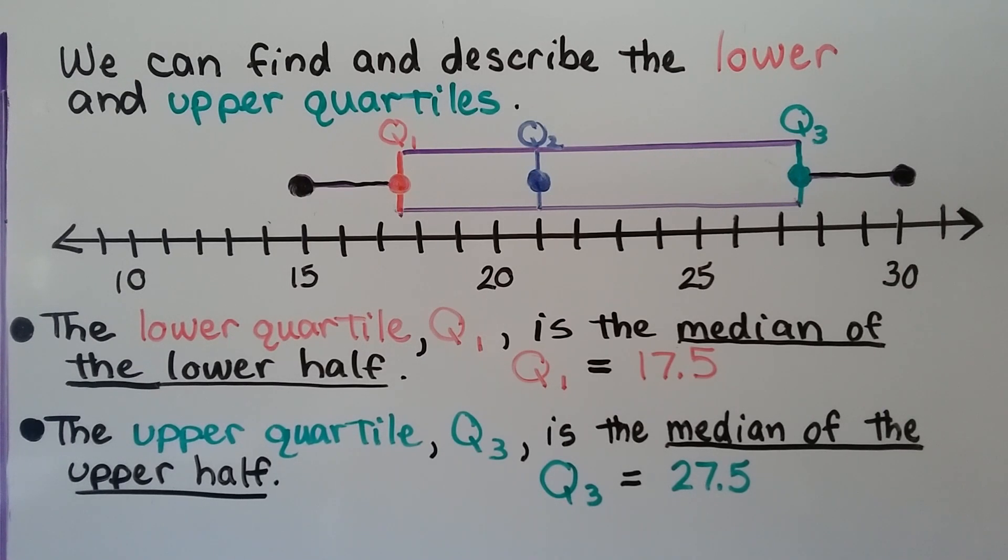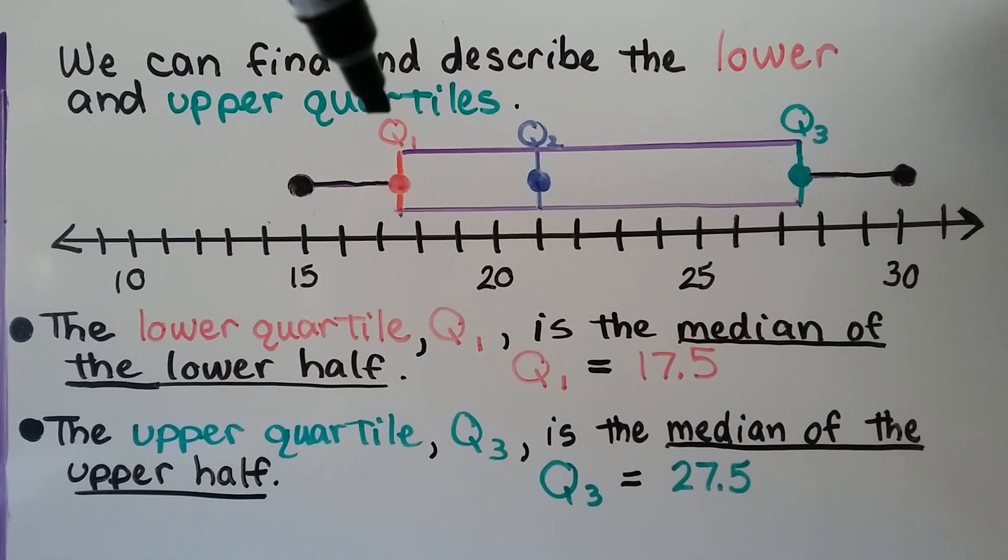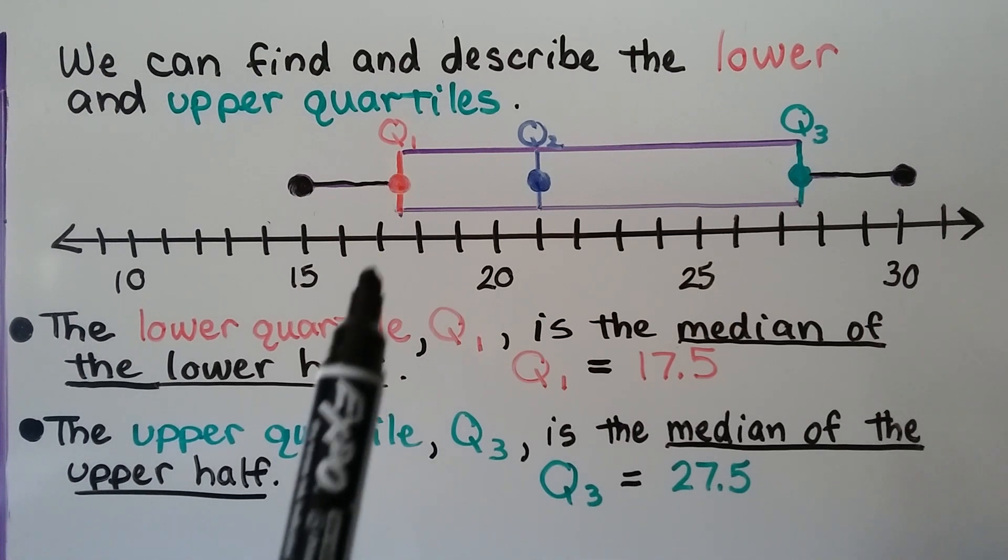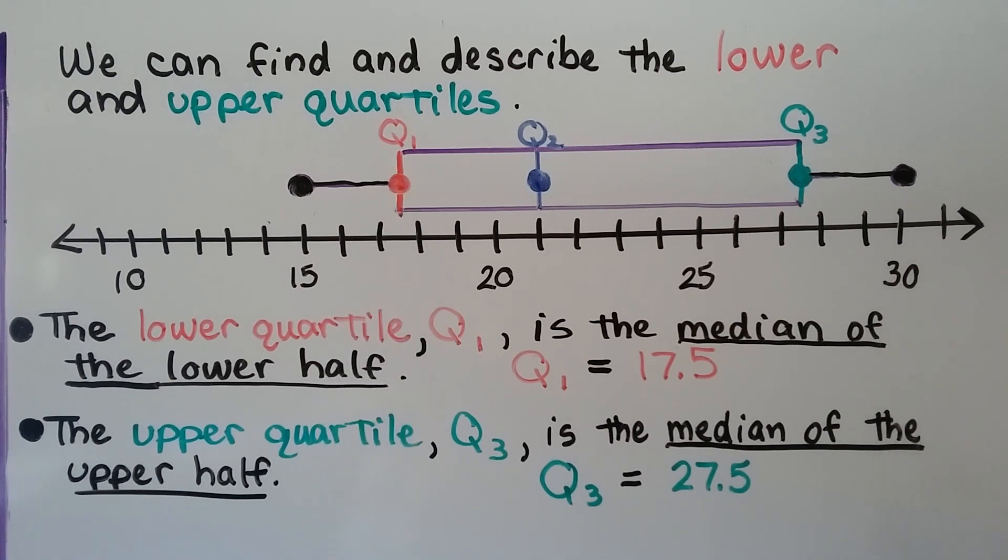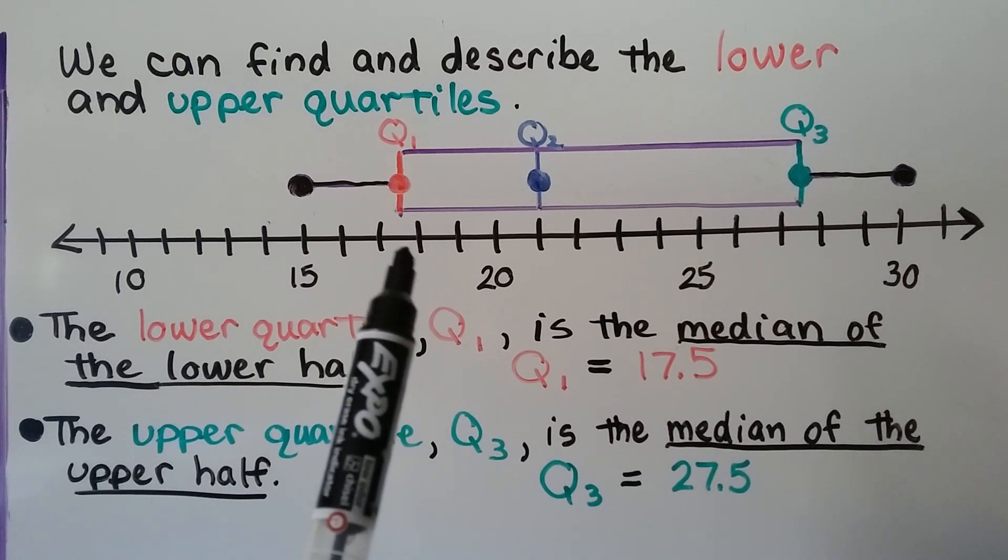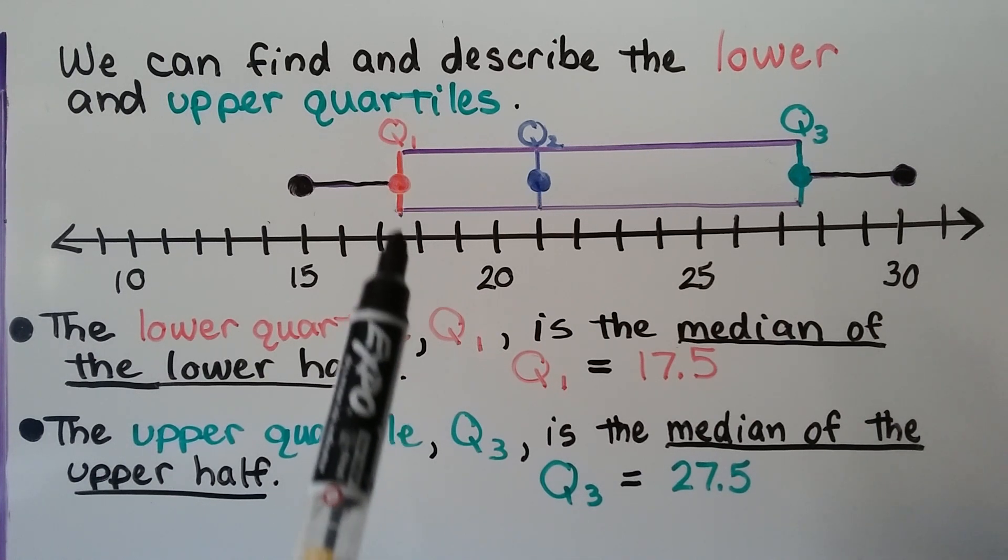We can find and describe the lower and upper quartiles. Here we have the same box plot. The lower quartile, that's this Q with a little sub 1, it's the median of the lower half. So this is the median of the lower half, and it's at 17.5 on the number line.